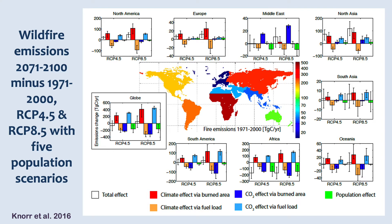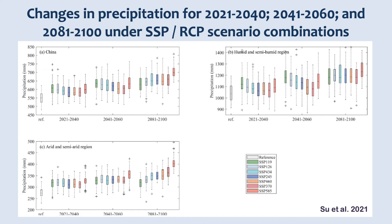Understanding populations is also important for understanding various kinds of exposures — in this case wildfire emissions toward the end of the century under two RCPs and five population scenarios, to show the important role population plays in thinking about wildfire emissions. More recent publications are using combinations of RCPs and SSPs, in this case for changes in precipitation over three time periods in China's humid, semi-humid, arid, and semi-arid regions.